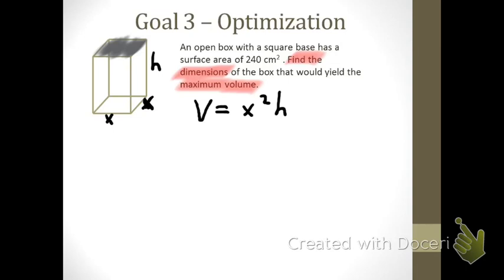The other information in the problem is that this open box with a square base has a fixed surface area of 240 square centimeters. Imagine you're a company making this box and you know you want to use 240 square centimeters of material — we're going to figure out the biggest possible box you can get from that amount of material. The surface area constraint will help us write the volume equation in terms of x only.